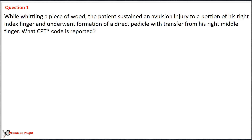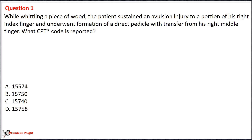While withdrawing a piece of wood, the patient sustained an avulsion injury to a portion of his right index finger and underwent formation of a direct vertical flap transfer from his right middle finger. What CPT code is reported? Option A: 15574. Option B: 15750. Option C: 15740.